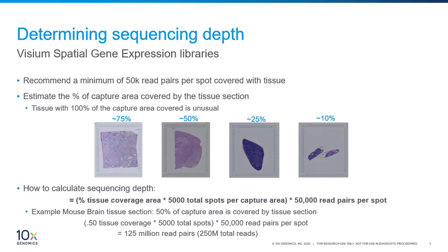Human breast, mouse brain, and mouse spleen. The calculation is quite simple. For example, you take the fraction of tissue covered area, multiplied by the number of spots, times 50,000 read pairs per spot. For mouse brain, this would be 0.5 of the tissue area, times 5,000 spots, times 50,000 reads, which is equivalent to 125 million read pairs for this library.